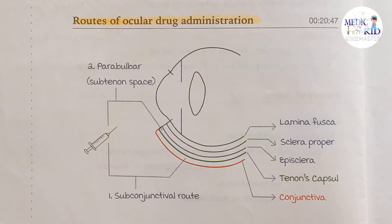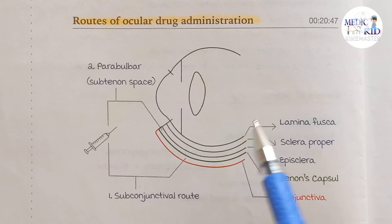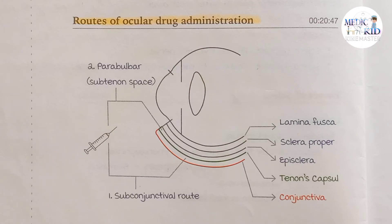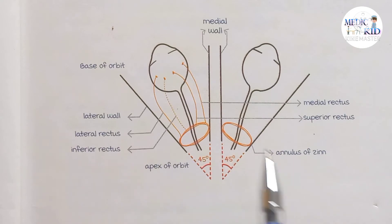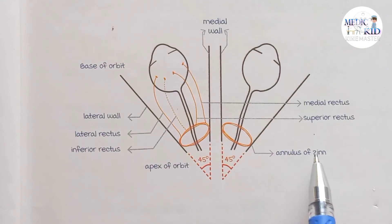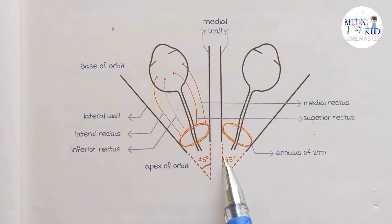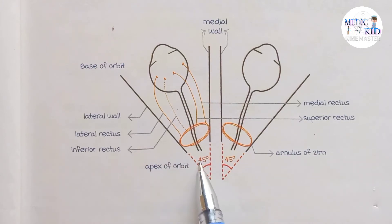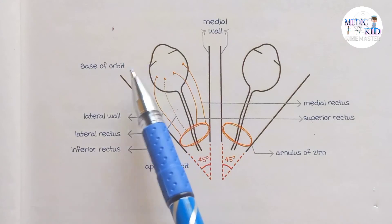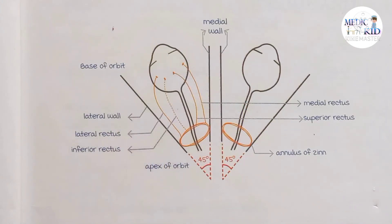To understand the peribulbar and retrobulbar routes, we need to understand the basic anatomy of the orbit. The eyeball sits within a ring-like structure known as the annulus of Zinn. There is a medial wall and a lateral wall, and the angle between them is about 45 degrees, forming a triangle shape, with an apex and a base.